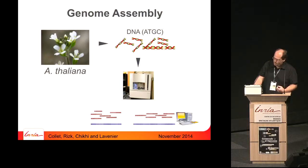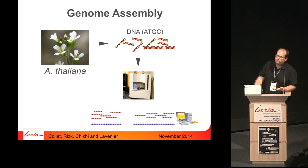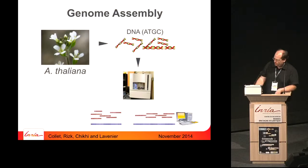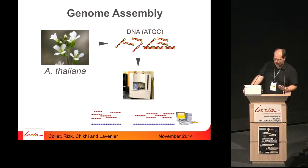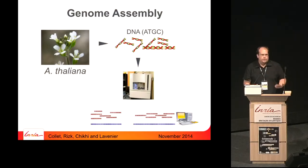What you do to sequence the DNA is you crush the cells. You have many cells, so you have many times the same genome. With chemical experiments, you can break the DNA into small pieces. Then you give it to a sequencer — this machine here. You get small strings of DNA, the small red parts shown here. And you want to find back the original genome. This is what we do with genome assembly.